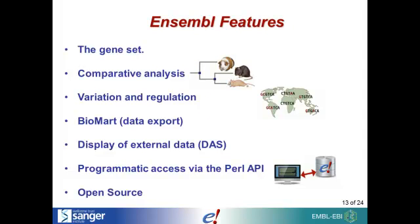Beyond the gene set, we also have comparative analysis. At the time of this video we're on release 64 of Ensembl with 57 species, and all homologues are determined using those 57 species. You can also see whole genome alignments, variation, and sequences that may be involved in gene regulation. Biomart is a tool that allows you to export data quickly. We also have external data in the browser via DAS, a shared format for viewing external data. If you know Perl you can access the database programmatically, and everything we have is open source, meaning you can access it freely.